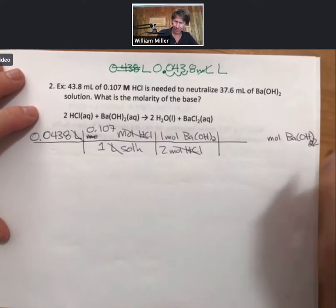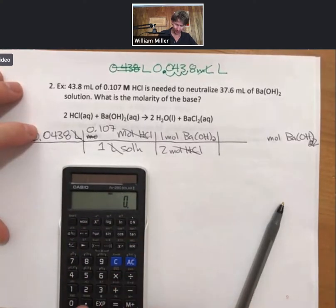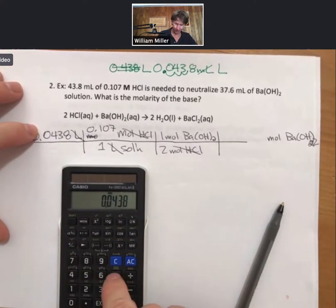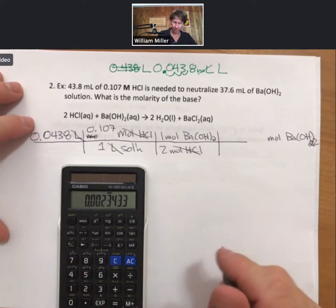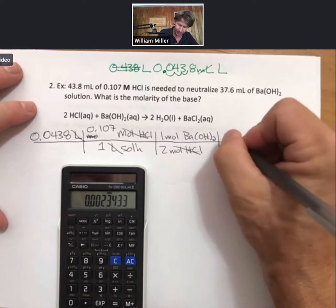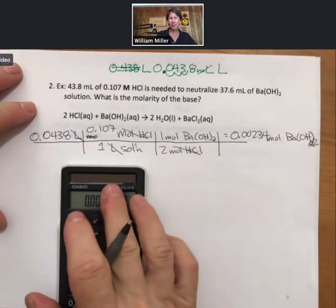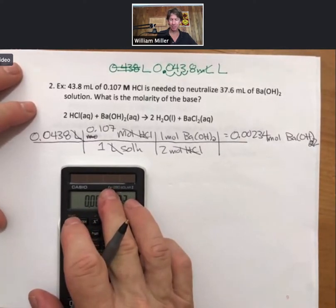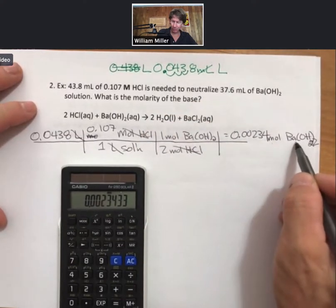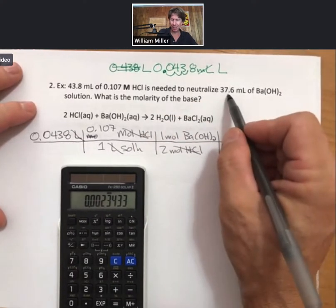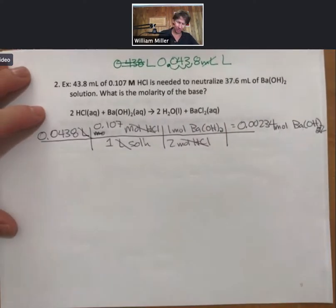And multiplying this out I get 0.00234 to three sig figs moles of barium hydroxide. But I'm asked for molarity and now I have moles of barium hydroxide and I have milliliters which I can convert into liters. And so I can put those two together.